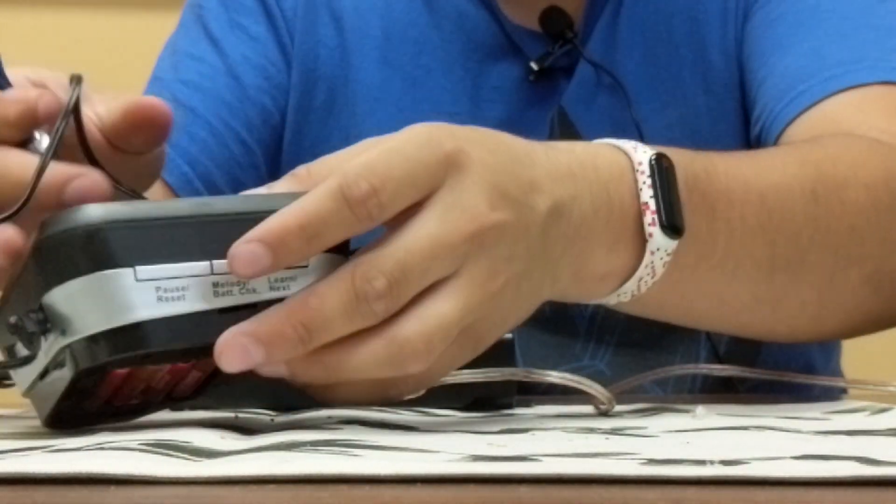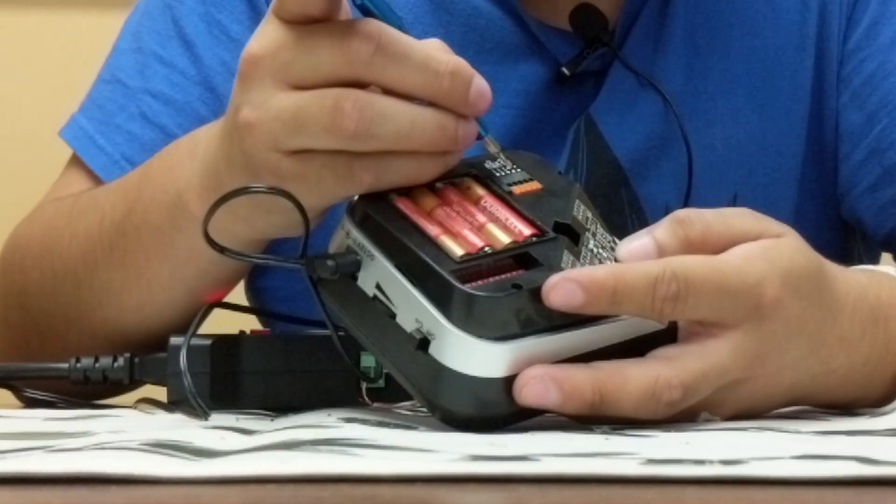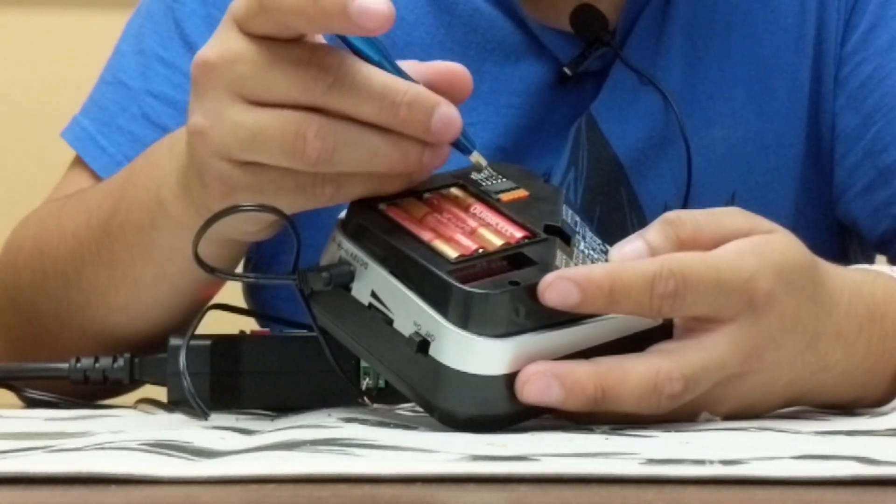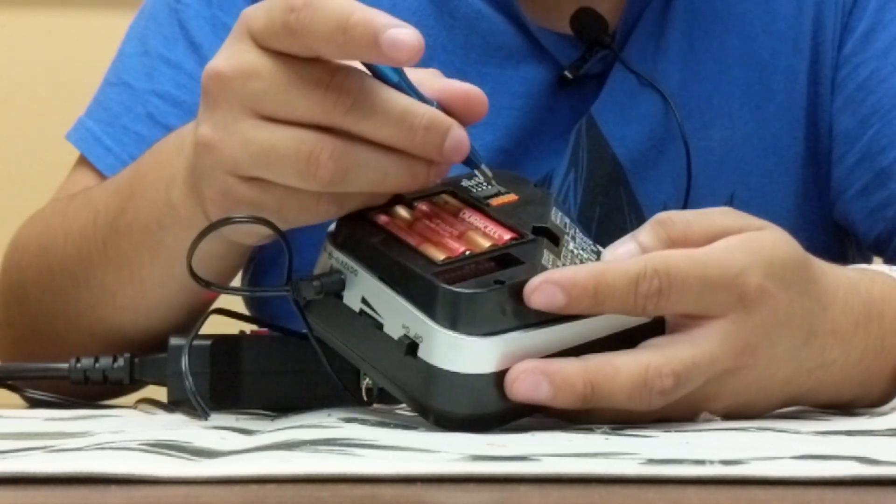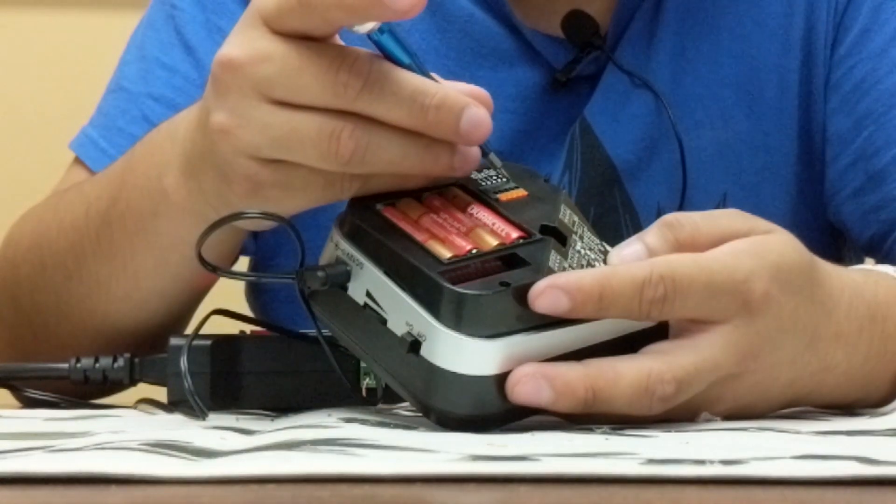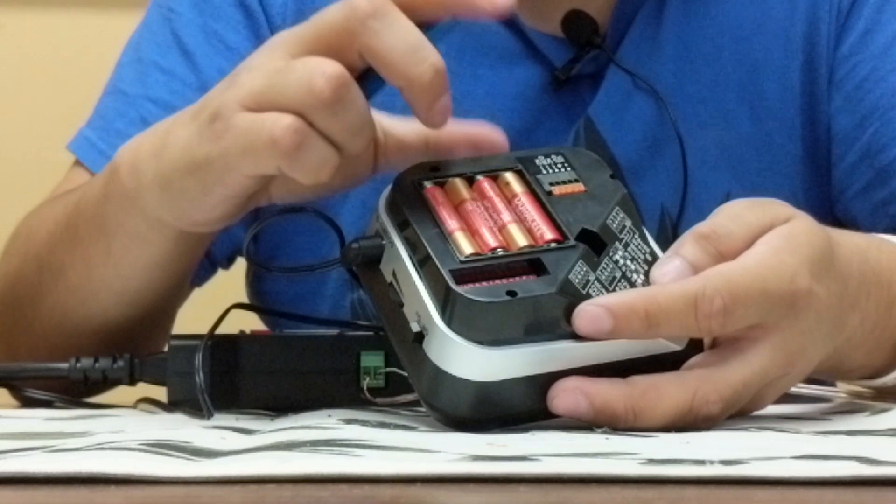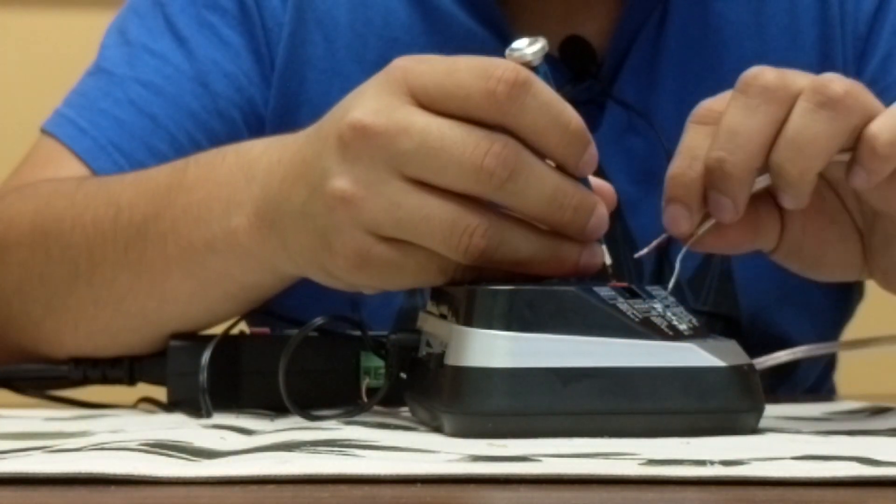Once we do that, we can look at our receiver here and look at our contacts here on the back, and we're going to want to connect, again, the red wire or positive wire to the positive contact, and then white wire or black wire, depending on what wires you buy, to the negative contact. To do that, we're going to want to press down on this orange tab here and feed in the wire. So we'll do that now.